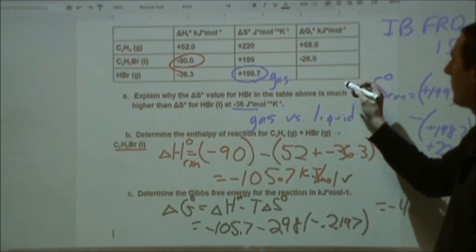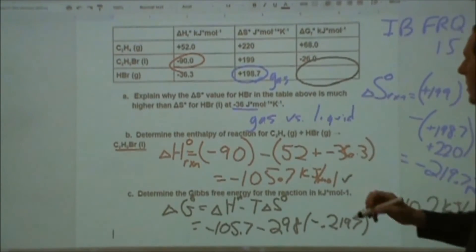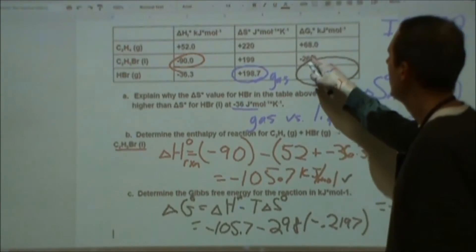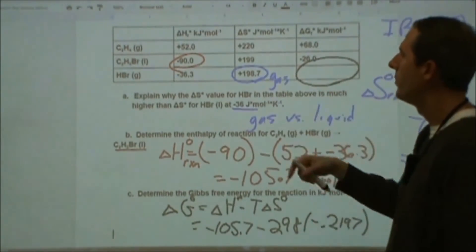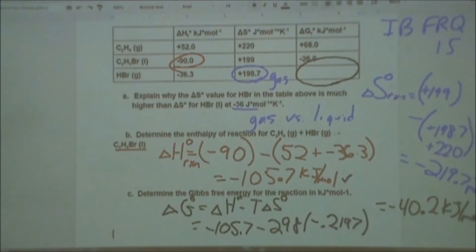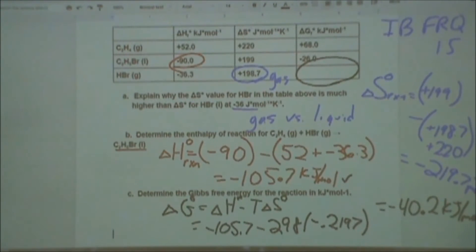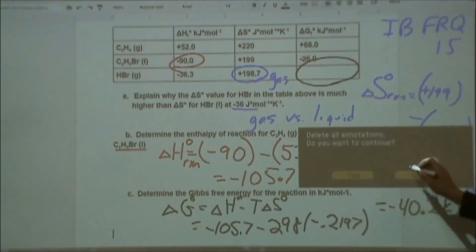Before that, when we get into part D, part D says figure out what this number is that's supposed to be here. So what we now know is the total change for the reaction is negative 40.2. And we know the standard values for the formation of two of the compounds. So what we're going to have to do is figure out, by doing the same process we've been doing, what that last value is. I'm going to go ahead and delete all of this.